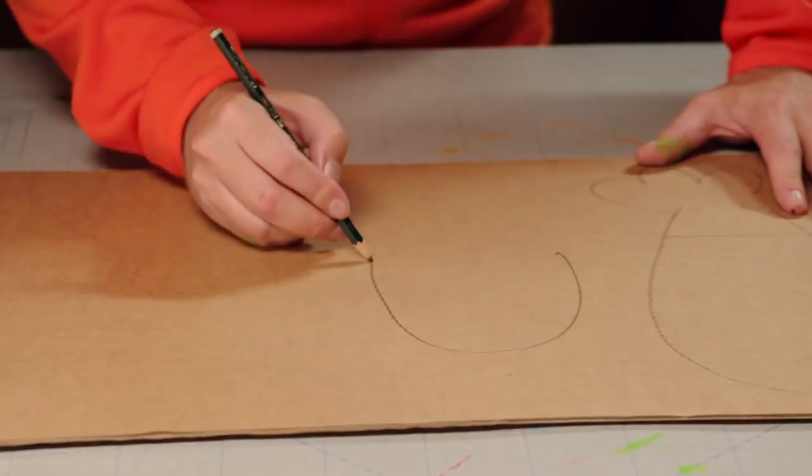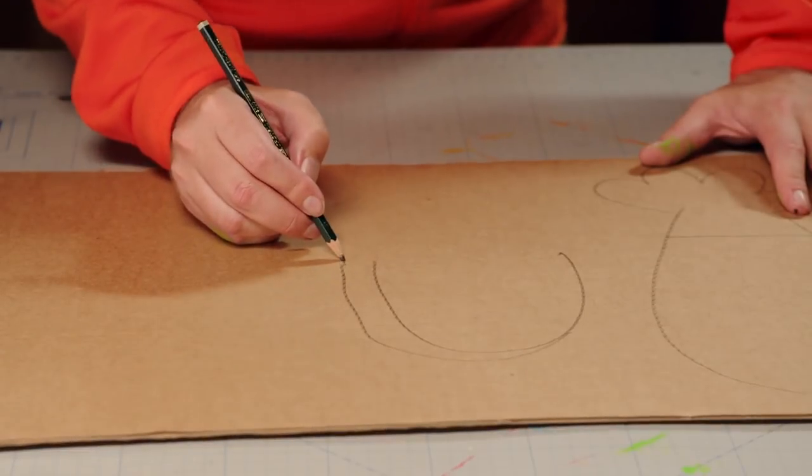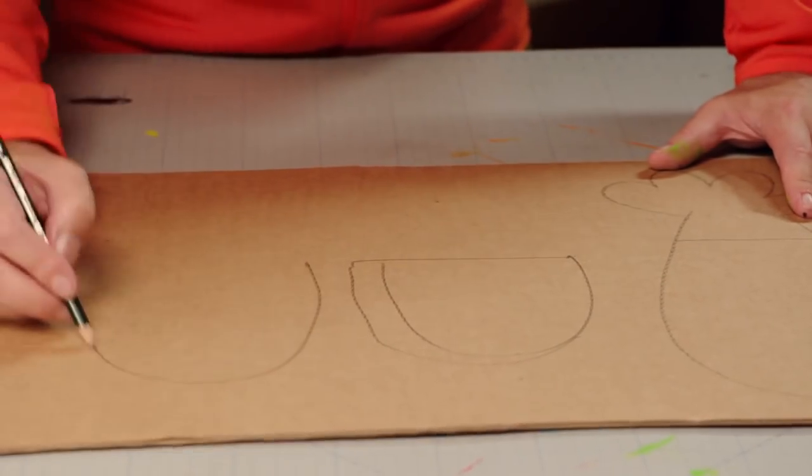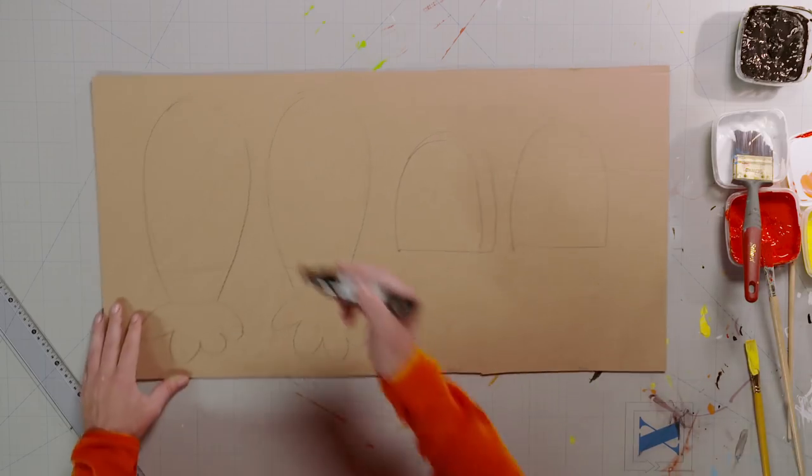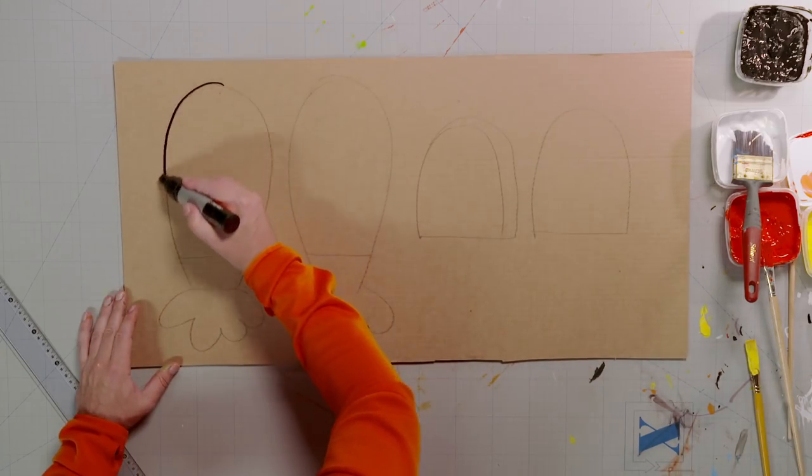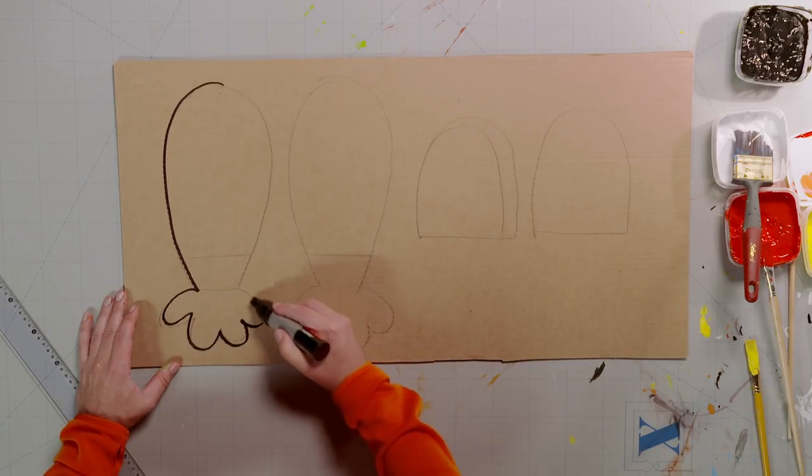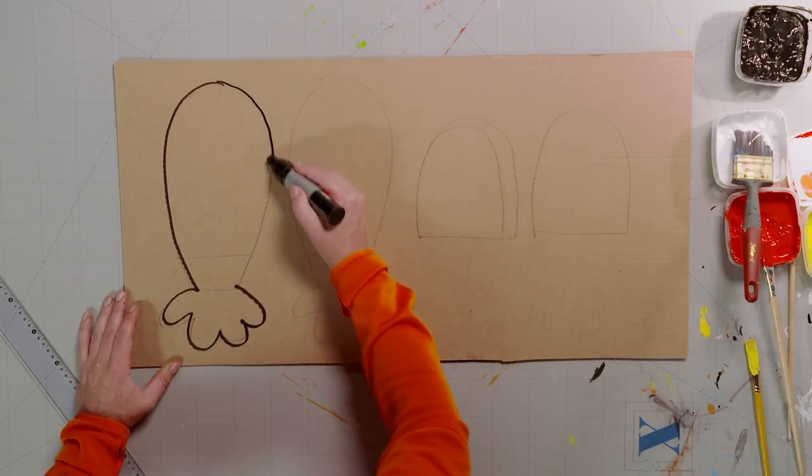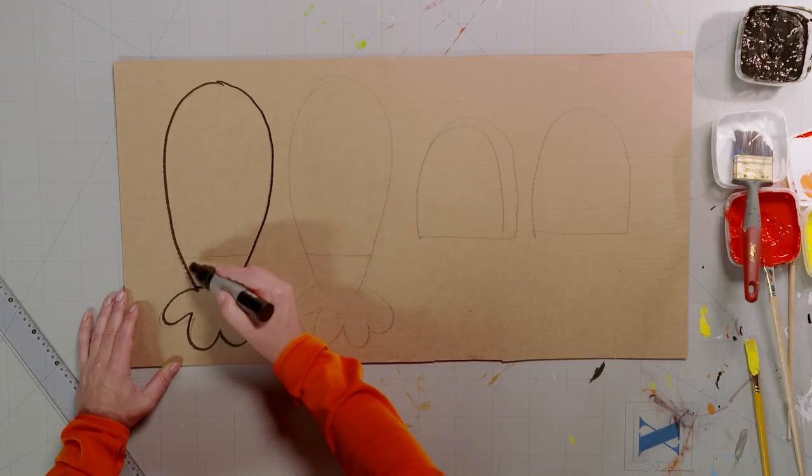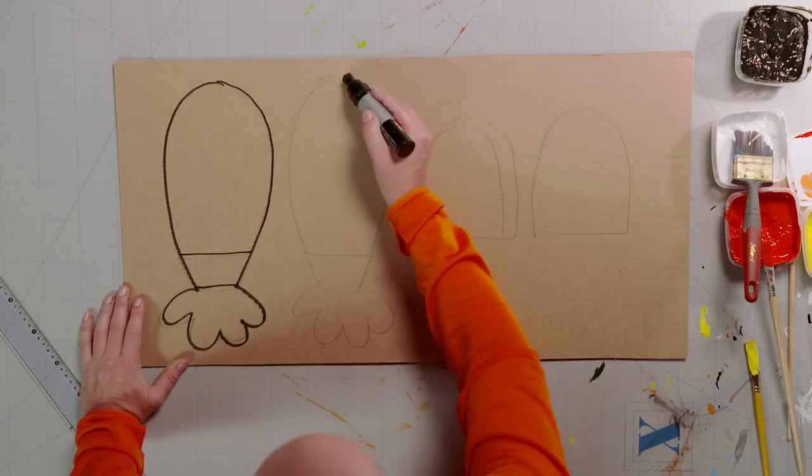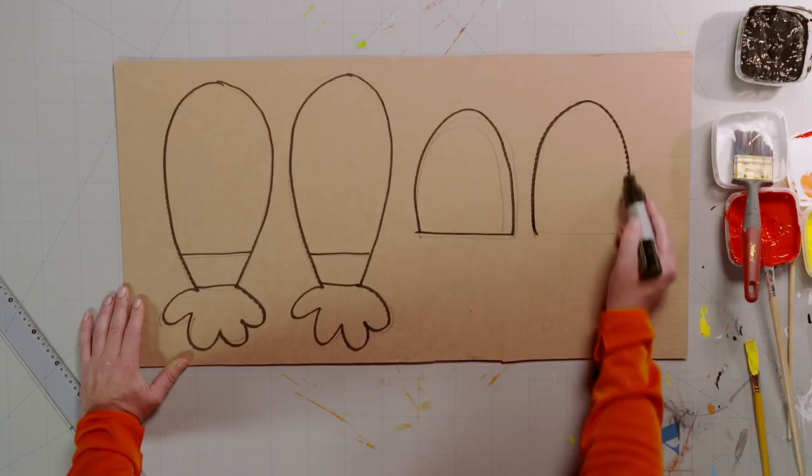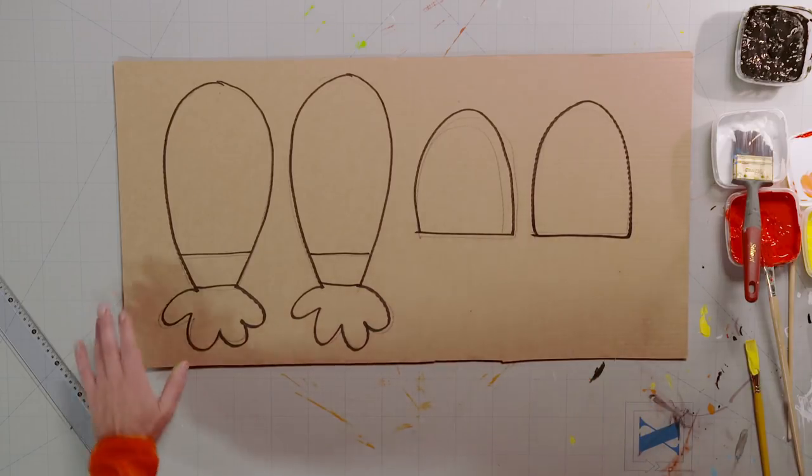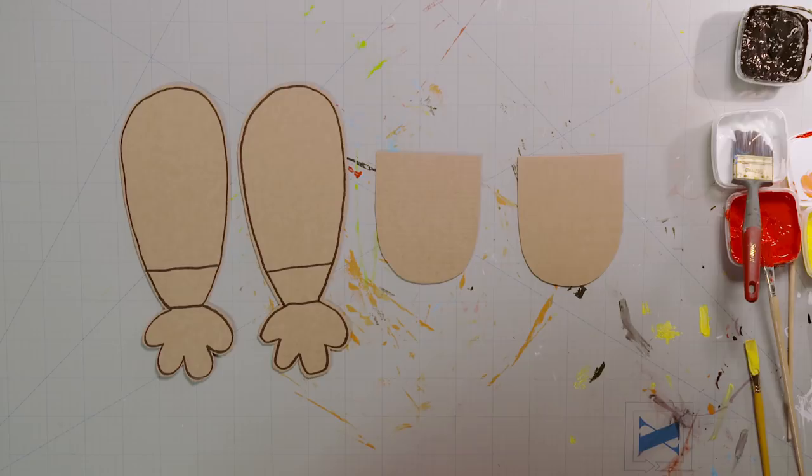We also need a pair of toe caps for his boots. When you have drawn the lines in pencil, go over them with a thick marker pen.